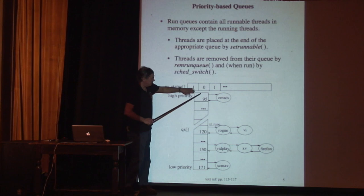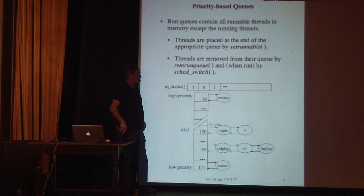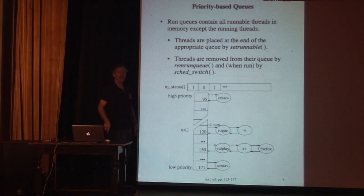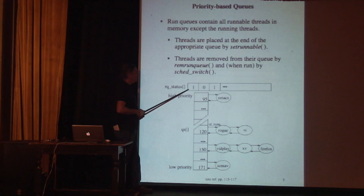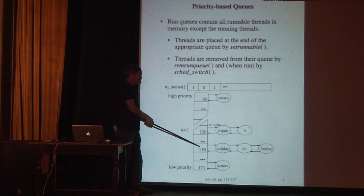We don't want to scan through 10 or 20 or 30 queues to find which one has something on it — each is at least 8 bytes, so there are many cache lines to hit. To speed finding a non-empty queue, we have a bit array called the status array. A bit is set if there's something in that queue, zero if there isn't. We pick up a single word or two, scan for the first bit set, and that gives us the index directly. We then go to that queue, pull the first thing off, and run it.